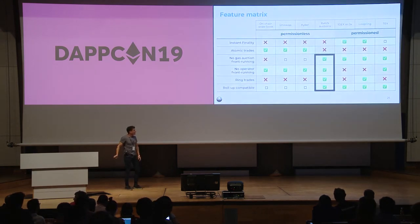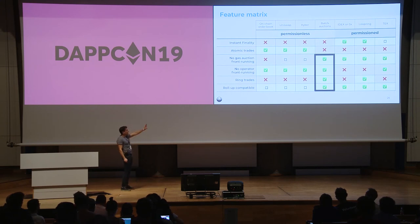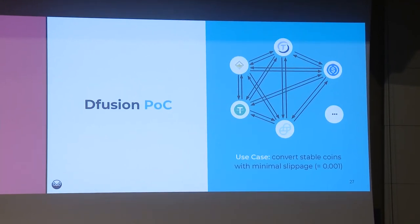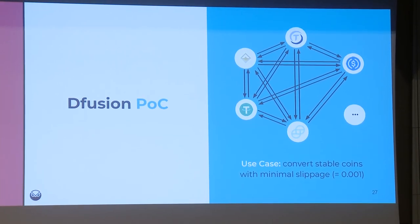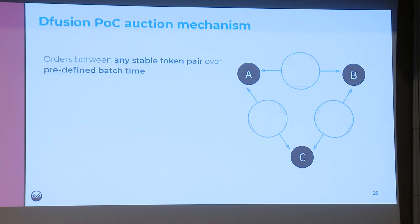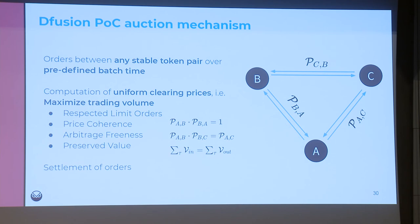Now I want to talk about what Gnosis is working on. We are really excited about batch auctions because of their cool features and resistance to front-running. What we are going to build is the Fusion POC, which should allow people to convert stable coins from one to another very cheaply. The stable coin market is really fragmented right now, and we think especially with ring trades we can build an exchange offering very low slippage. We collect limit orders between any two stable tokens over a predefined time — probably about five minutes — then calculate uniform clearing prices in a very decentralized way.